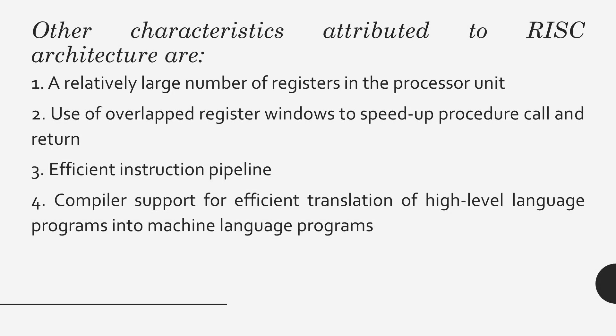Apart from general characteristics, if a particular system is using RISC type of architecture, it also has its own specific characteristics. First, it should have a large number of registers because most operations in RISC are carried out using registers. It also uses an overlapped register window, which will be covered in the next video. It also uses an efficient instruction pipeline.